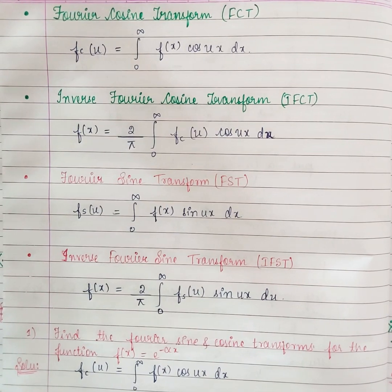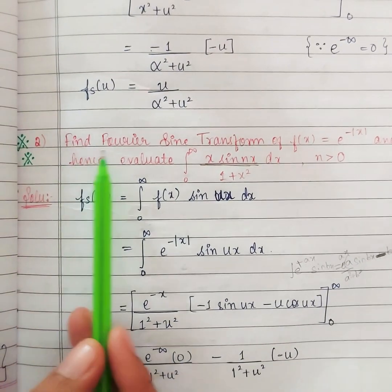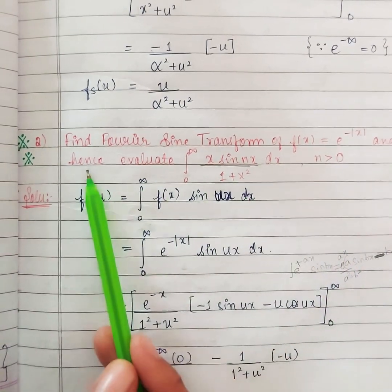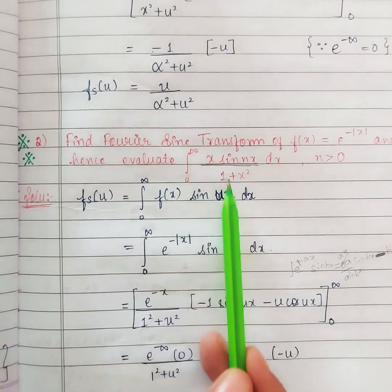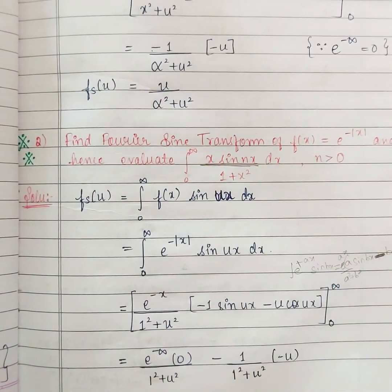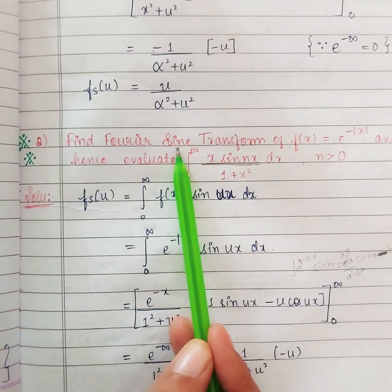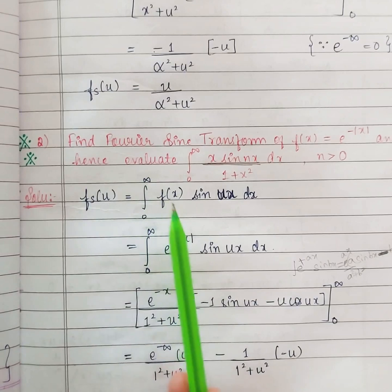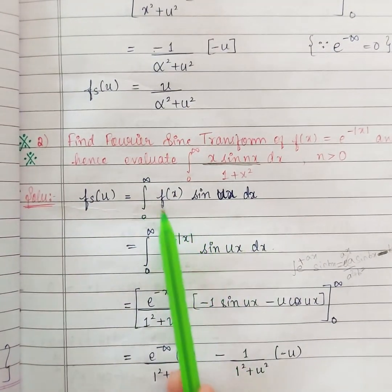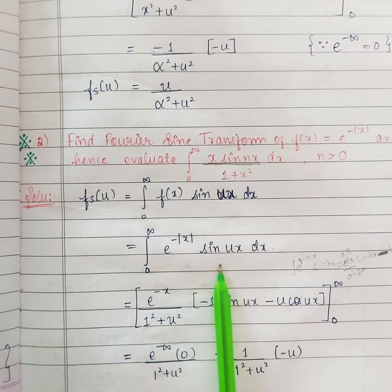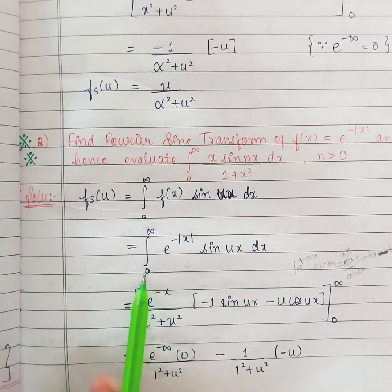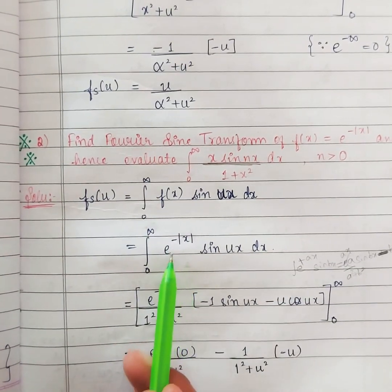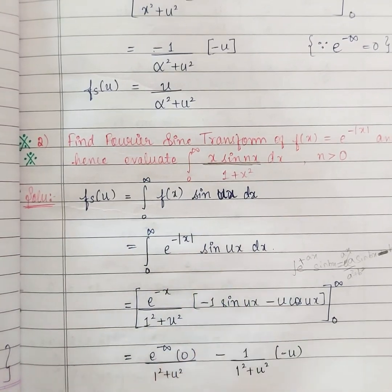Now let us see a problem. Find the Fourier sine transform of f of x equal to e power minus mod x, and hence evaluate the integral 0 to infinity where n greater than 0. Since we have given sine transform, we are writing f suffix s of u equal to integral 0 to infinity f of x sin ux dx. My function f of x is e power minus mod x sin ux dx. Since the limit is from 0 to infinity, this is going to be positive, so your function is nothing but e power minus x sin ux dx.